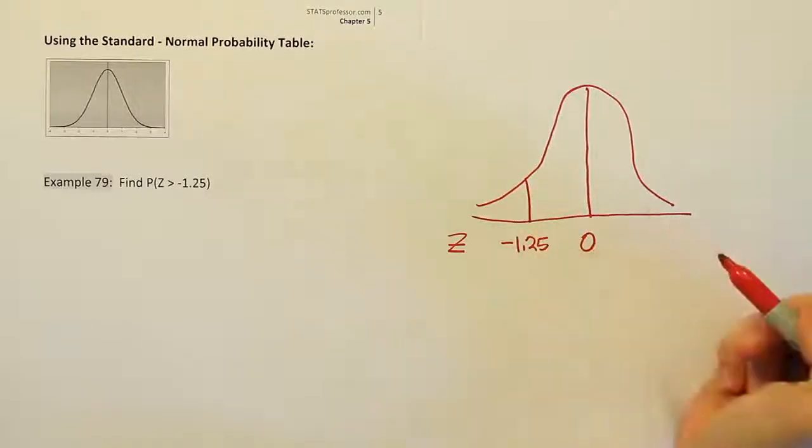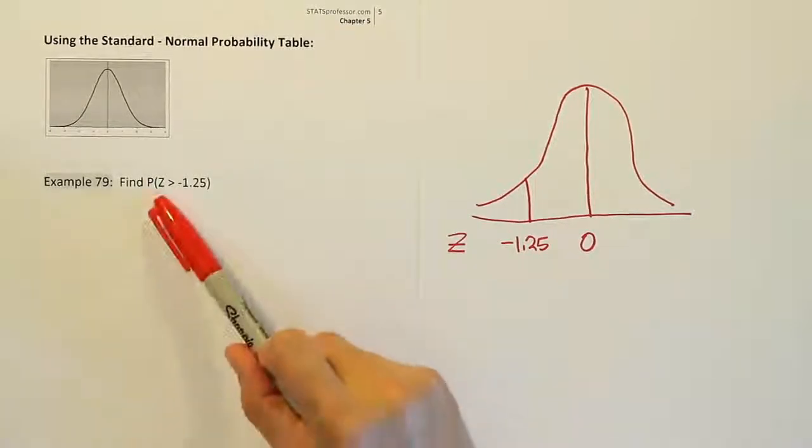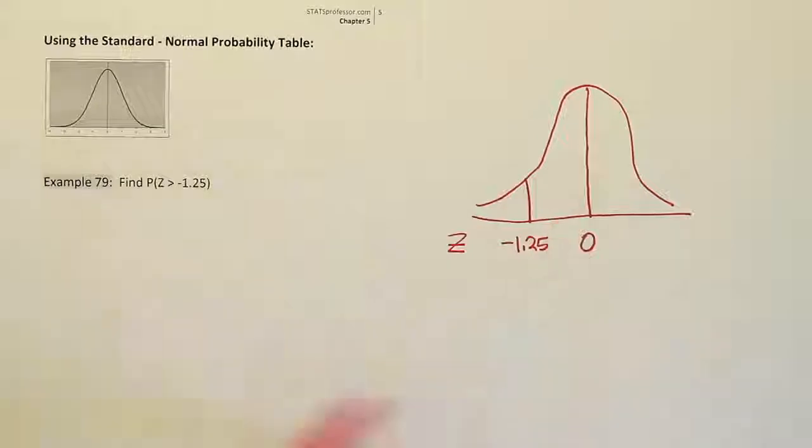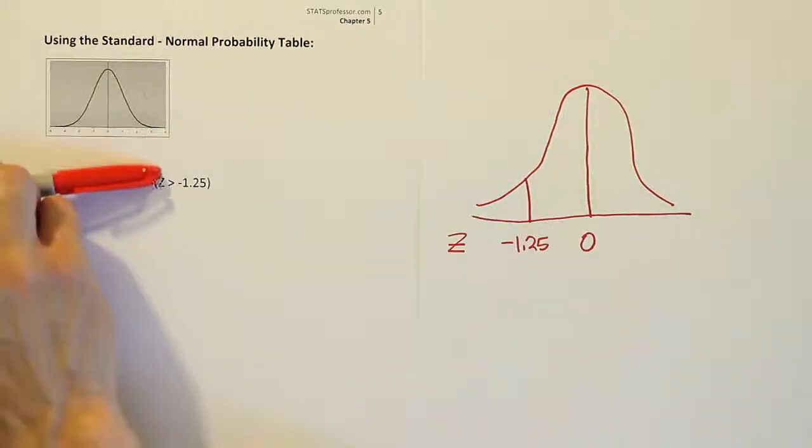Draw a line above that on the curve and then shade the appropriate area. Now remember this is saying z values that are greater than this number. Greater than is to the right.